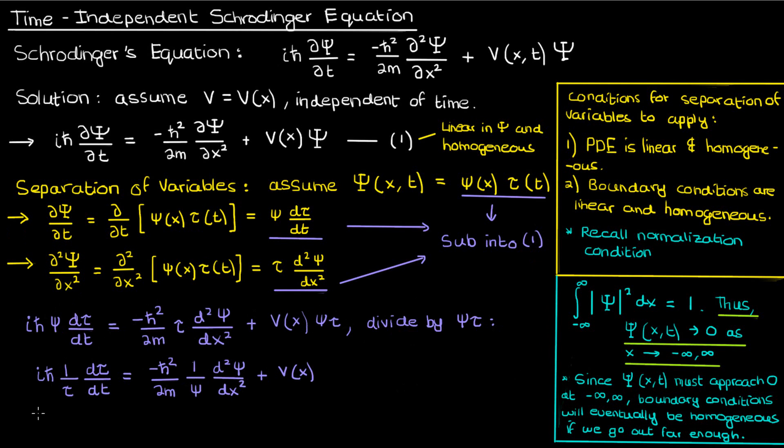The reason we do this is to officially separate the variables x and t into different sides of the equation. This is where we have to be a bit clever. The left side is only a function of the time t while the right side is only a function of the position x.